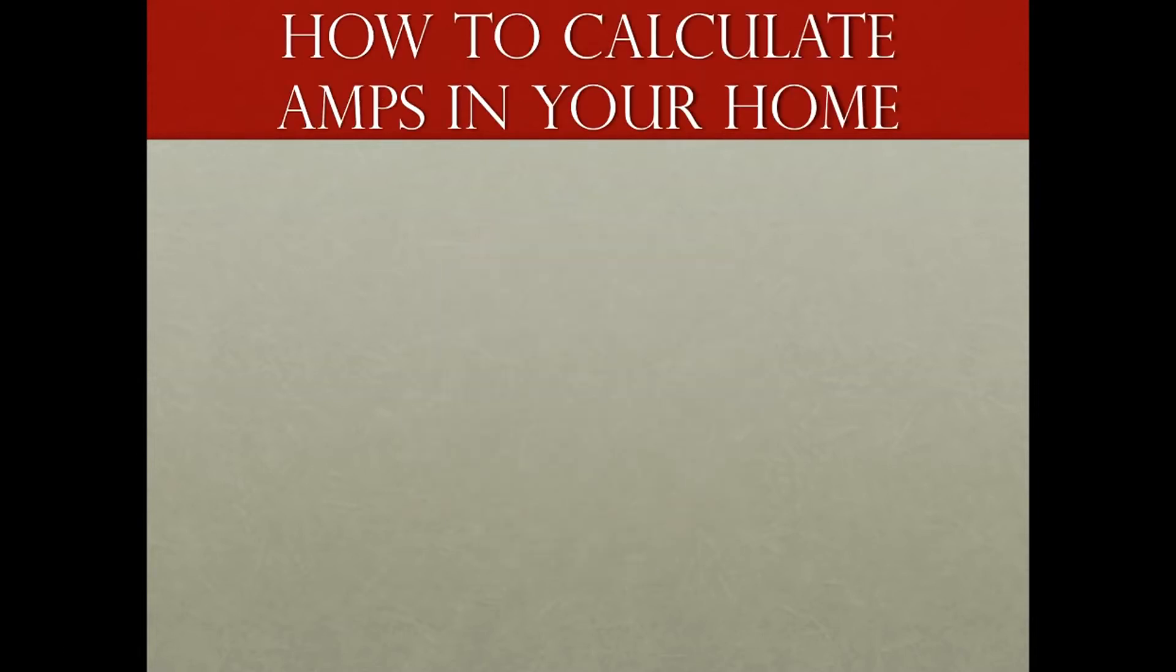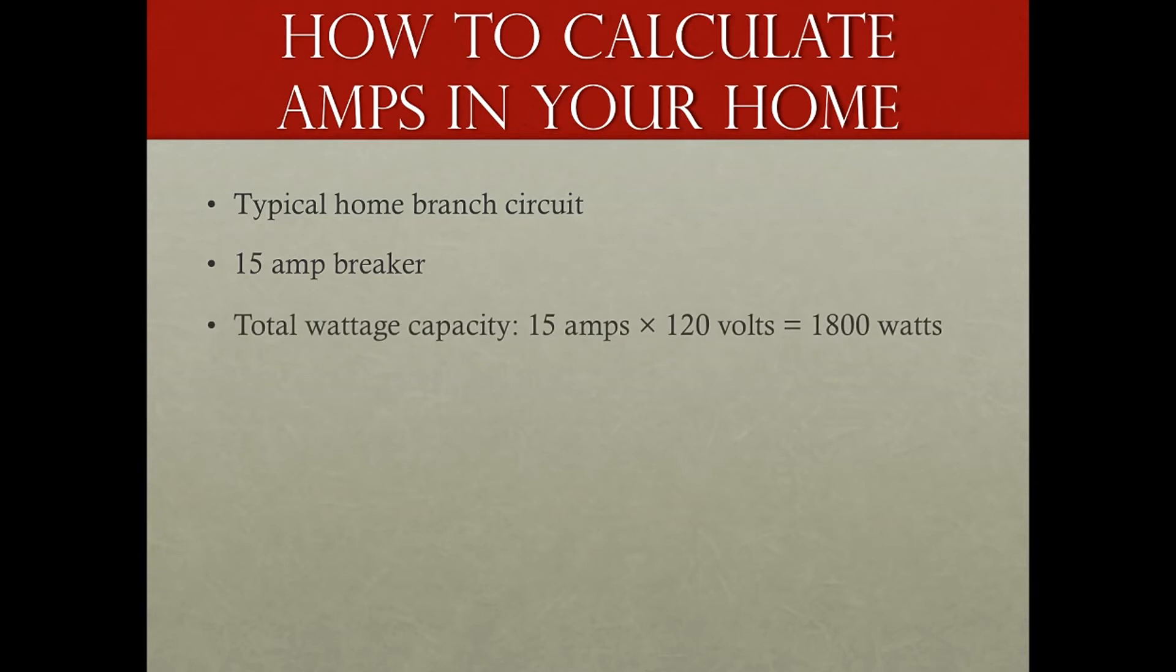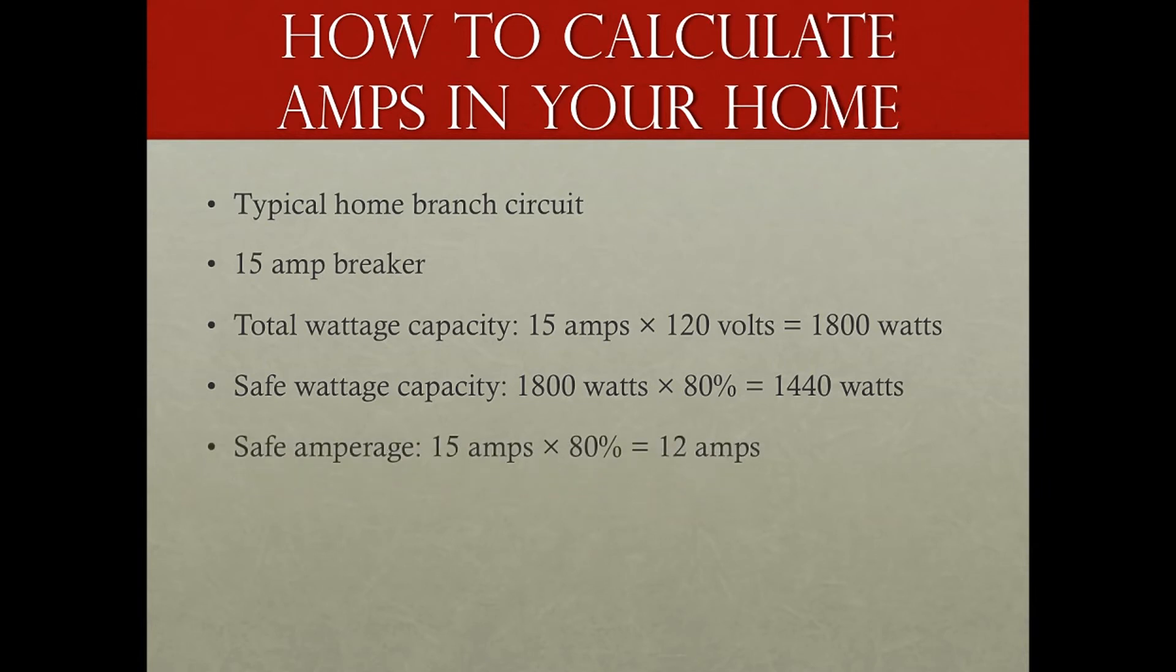So let's take something we haven't gotten into the circuits yet. Let's take something we can all wrap our head around, that is amps in our home. So if we want to take a typical home branch circuit, say we had one like a 15-amp breaker, and you could use that on something like lighting. Typically they use like 20 amps on receptacles. But this is just an example. So we'll take a total wattage capacity is 15 amps times 120 volts equals 1,800 watts. Now there's always a safety or a fudge factor that you want to calculate in there. So we take the safety wattage capacity is 1,800 watts, and we always multiply that by 80%. It gives us 1,440 watts. And our safe amperage would be 15 amps times the same factor, 80% gives us 12 amps.